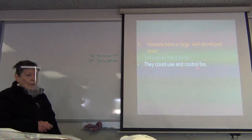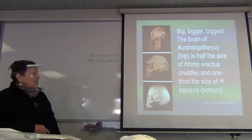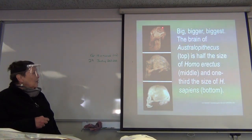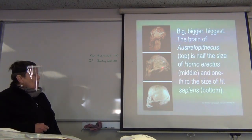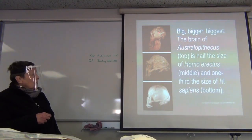Large, well-developed brains, which was awesome because then they could make tools, they could use tools. They could use and control fire. And that added a whole new aspect to human life because they could cook, and therefore food was easier to digest, but they could also use it as protection and they could also use it to maintain body temperature.